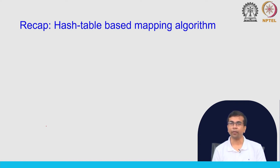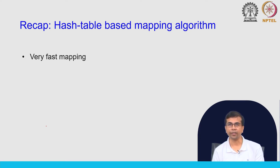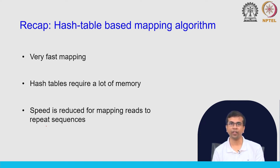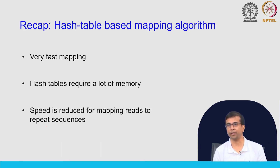To briefly recap: in the last class we talked about hash table based mapping algorithms. This is a very fast mapping process because we store the hash table in memory and we can search very efficiently. Hash tables require a lot of memory — about 12 to 15 GB of space for storing the human genome hash table. The speed of mapping is also reduced if you are mapping reads to repeat sequences, because you need to extend the seed and stitching process for multiple regions, which takes more time.